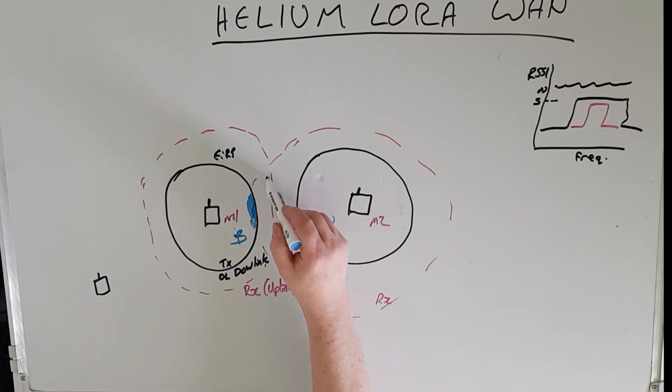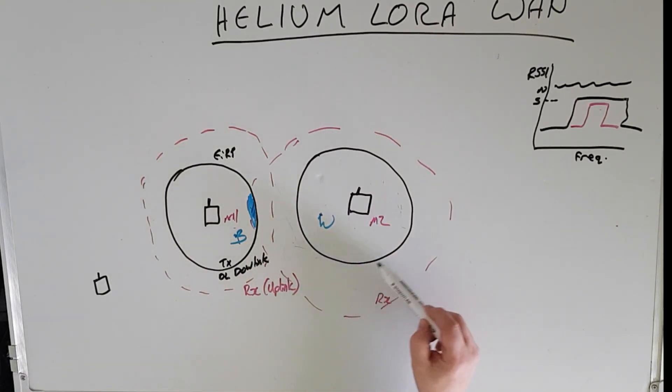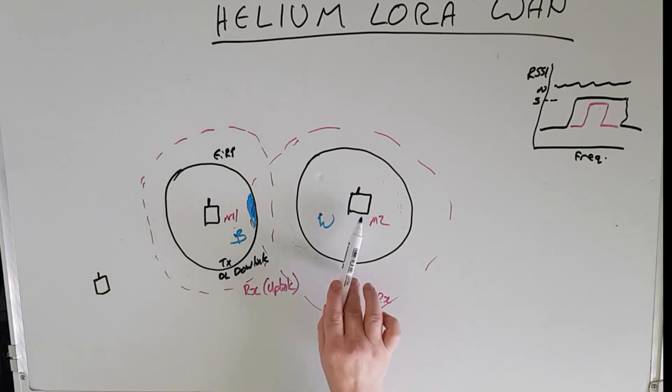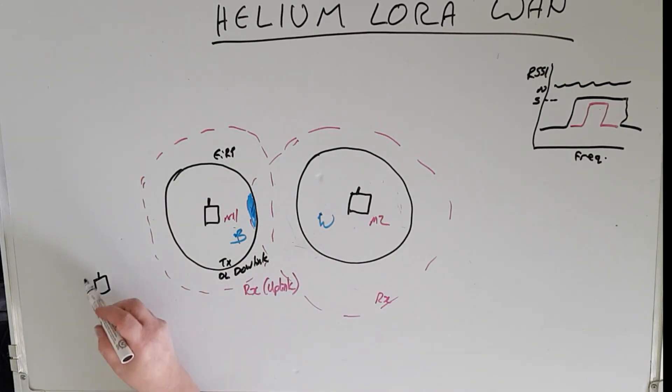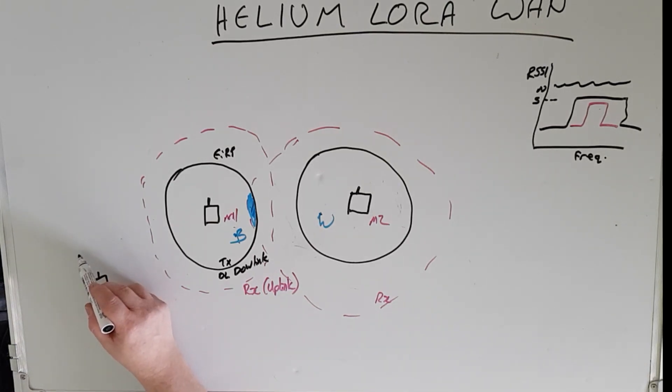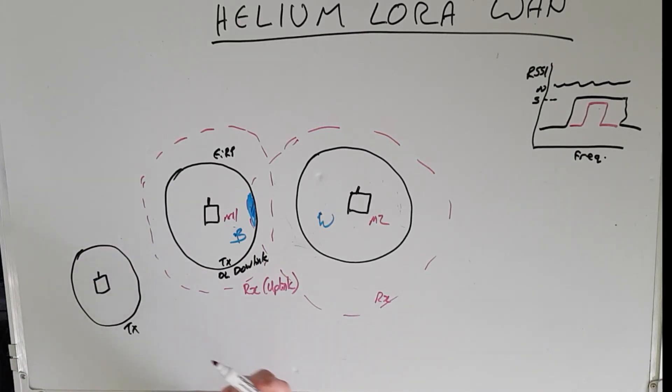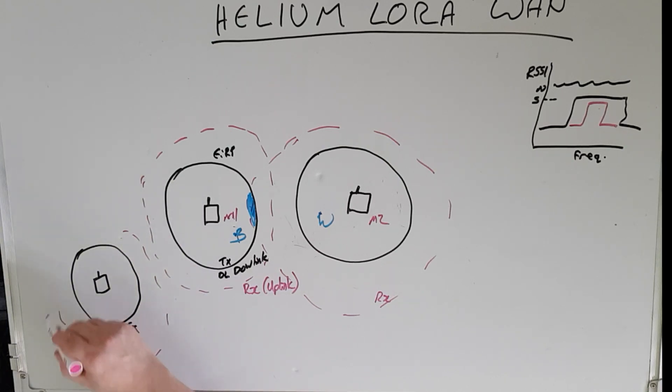However, this area of receive coverage does not overlap this transmit coverage. So miner number one is not a witness to miner number two. As for this guy, maybe he's got a smaller antenna or something. So the area of transmit coverage is a lot smaller. And maybe he's not got as good a receiver as well or something. So the receive coverage is only that much.